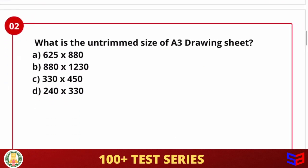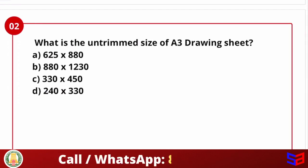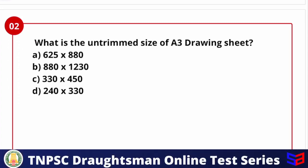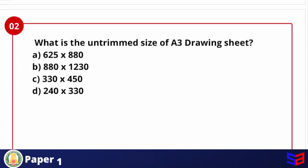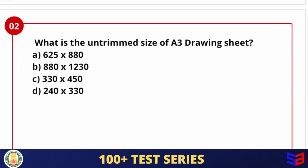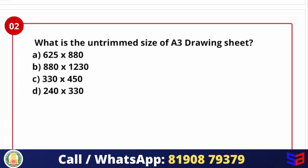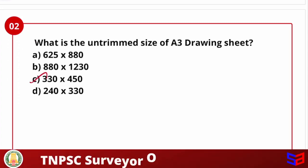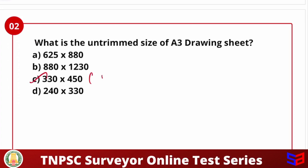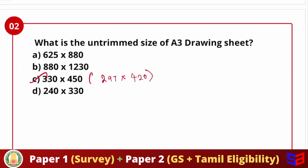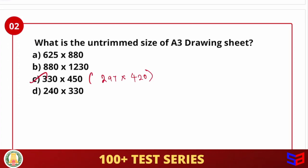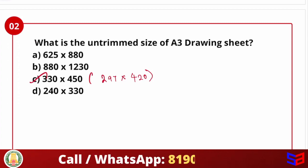Next question: What is the untrimmed size of an A3 drawing sheet? Drawing sheets and drawing boards have designated sizes. For A3, the untrimmed size — answer is C — is 330 x 440 mm. The trimmed version is 297 x 420 mm. The untrimmed size is slightly oversized compared to the trimmed version.